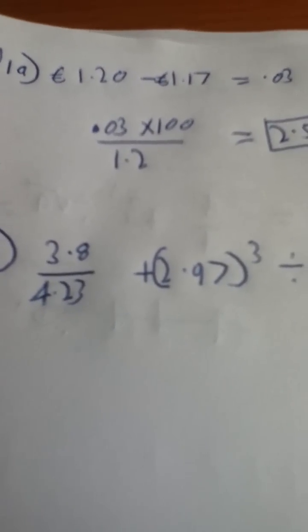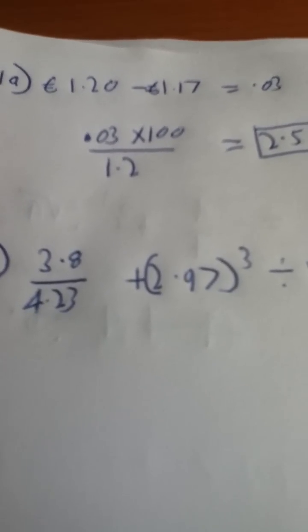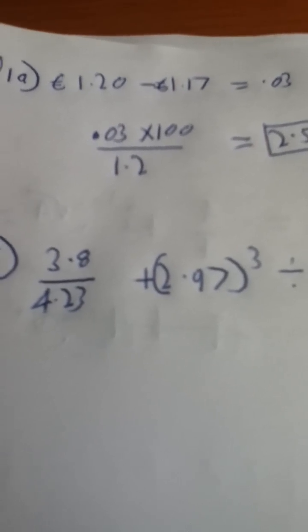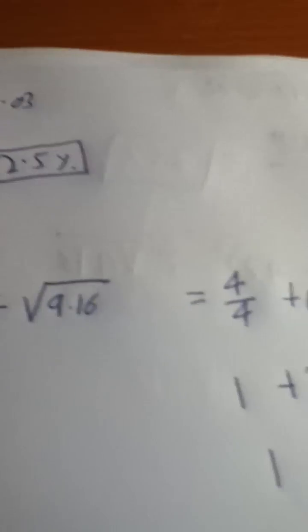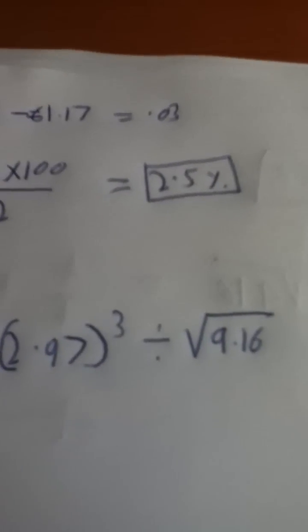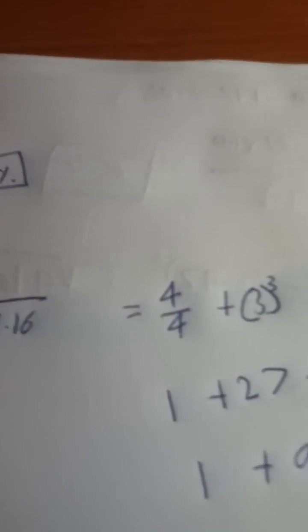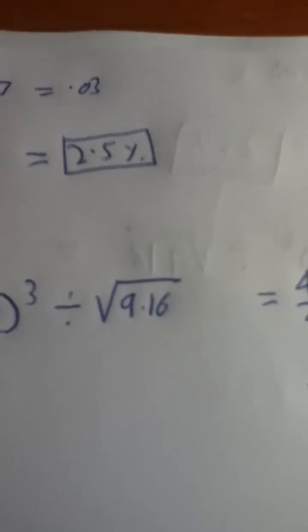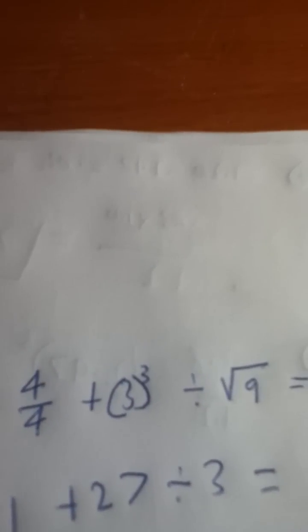In this you are asked to round to the nearest whole number and estimate the value of: 3.8 divided by 4.23 would give you 4 over 4. And 2.97 cubed would give you 3 cubed and 9.16 would give you root 9.